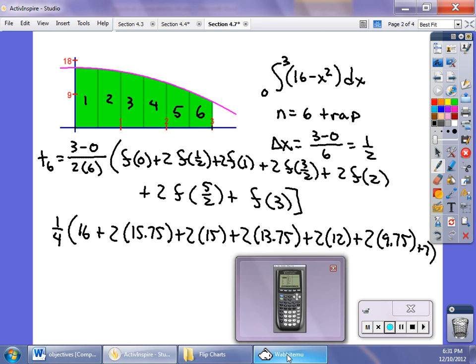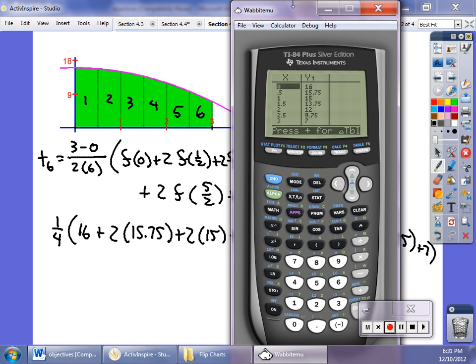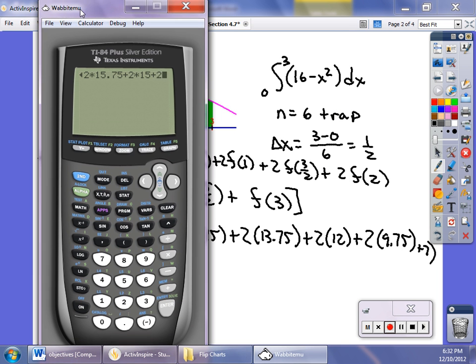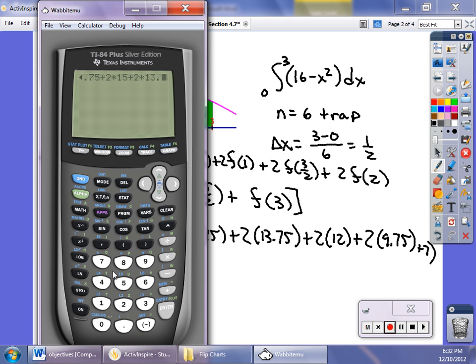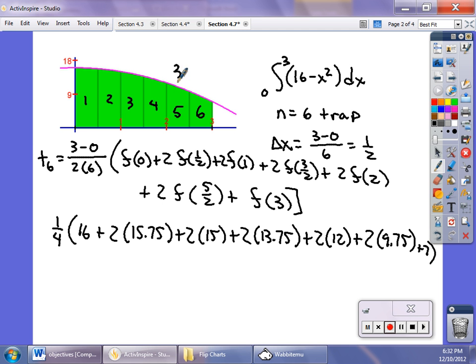It's just a matter of crunching the numbers. You don't have to flip back and forth between your calculator and the board. Add them all up. Don't forget the 0.25 or one-fourth out front. It's about 38.875. Notice that's a little bit of an underestimate—I think the exact value was 39, but it's getting closer and closer.